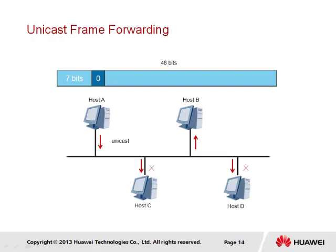Frame forwarding is achieved using one of three methods. Unicast represents the first method and defines transmission sent from a single source to a single destination, even in cases where multiple devices are connected to the same segment. The eighth bit in the most significant octet, or first byte, is always set to zero for unicast, to represent that it is intended for a single destination only. In a shared collision domain, all connected hosts will receive the physical transmission; however, the frame will only be processed by a single recipient, while all other hosts will ignore the frame since the destination MAC address differs from their own interface MAC address.